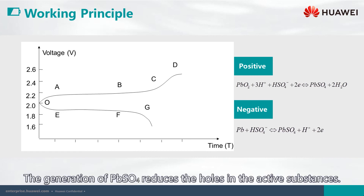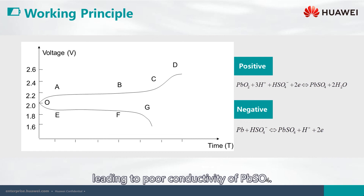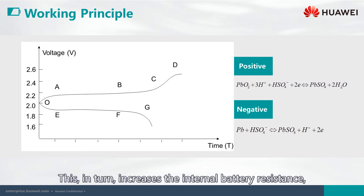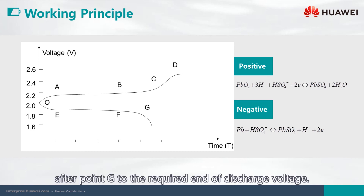The generation of lead sulfate reduces the holes in the active substances. This makes it more difficult for sulfuric acid to enter the micropores, leading to poor conductivity of lead sulfate. This, in turn, increases the internal battery resistance, causing the terminal voltage to drop dramatically after point G to the required end of the discharge voltage.